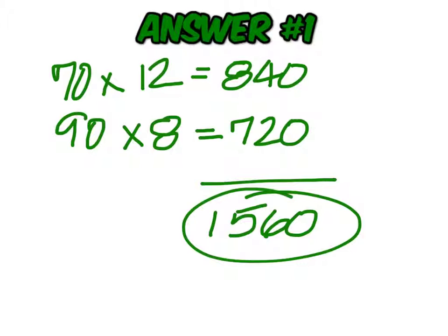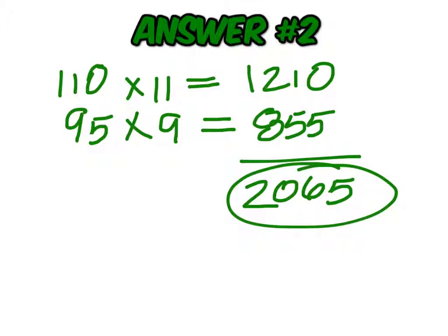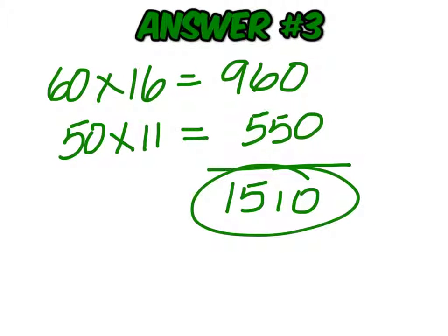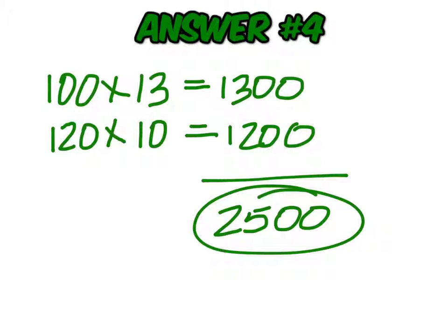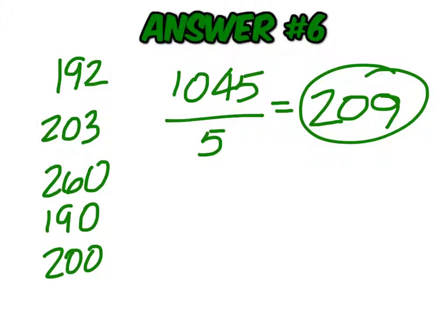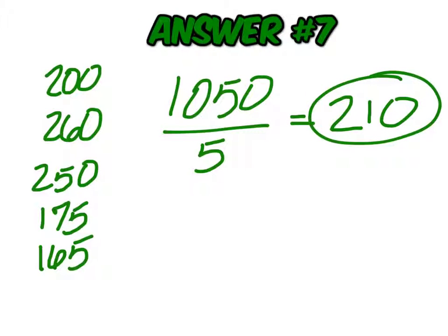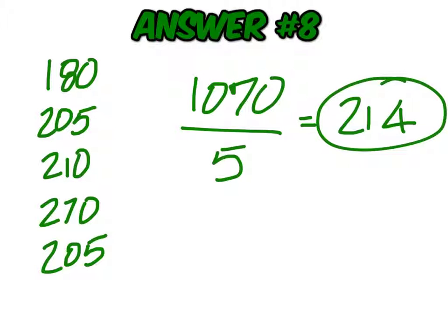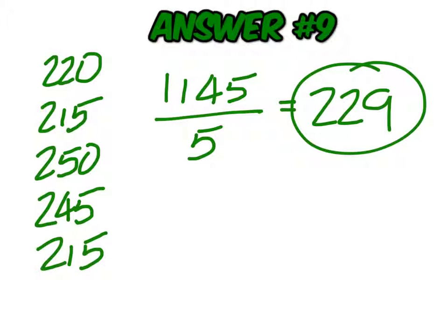Number 1 is 1,560. 2 is 2,065. 3 is 1,510. 4 is 2,500. 5 is 1,575. 6 is 2,090. 7 is 2,100. 8 is 2,140. 9 is 2,290. And 10 is 2,450.